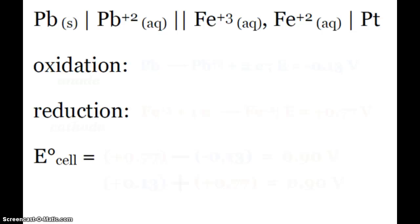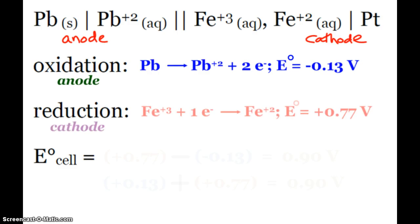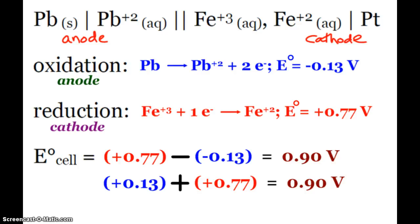Looking at this example, here I have my cell notation, and of course remember that my cell notation always starts with my anode and ends with my cathode. Because of that, I can easily see the lead is doing the oxidation, and the iron ion is being reduced. Finding those values on my reduction potential list, and plugging them into my cell voltage equation, I see that I end up with a positive 0.90 volts. So yes indeed, this reaction, this electrochemical cell is thermodynamically favored as set up.